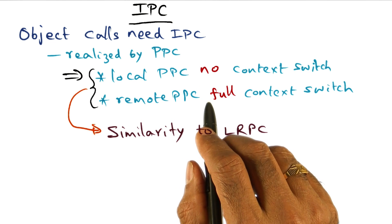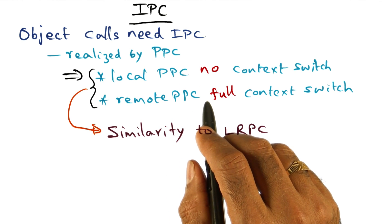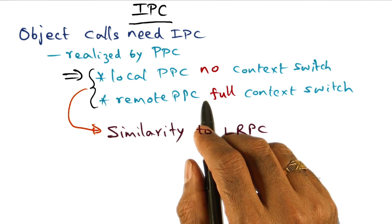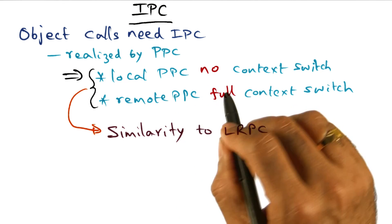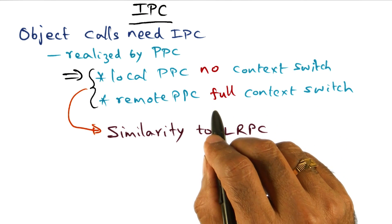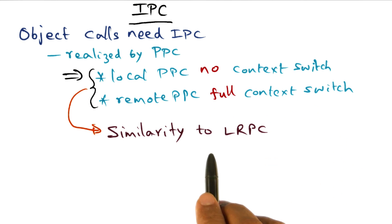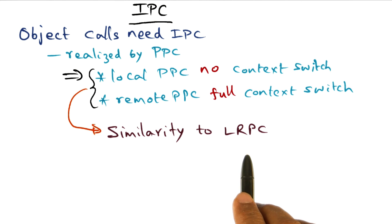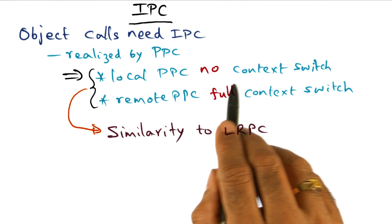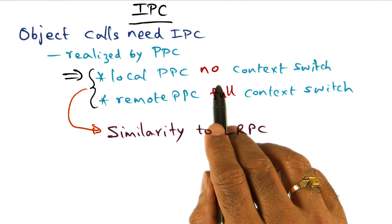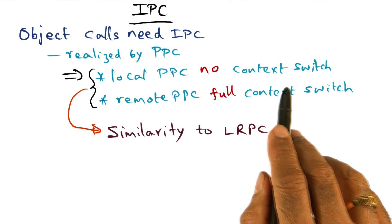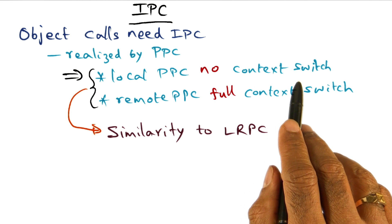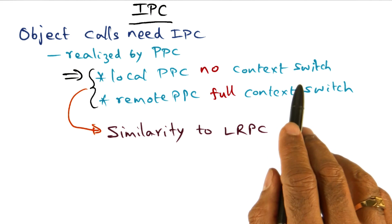If the calling object and the called object — the client and the server — are on the same processor, then Tornado uses handoff scheduling between the calling object and the called object. This is very similar to what was discussed in the LRPC paper on how we can have efficient communication without a context switch. With a local protected procedure call, you don't need a context switch; you implement it by handoff scheduling between the calling and called objects.